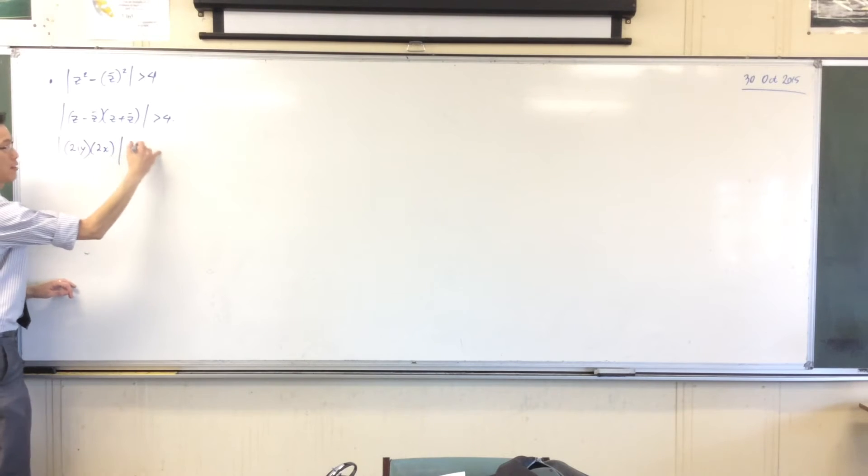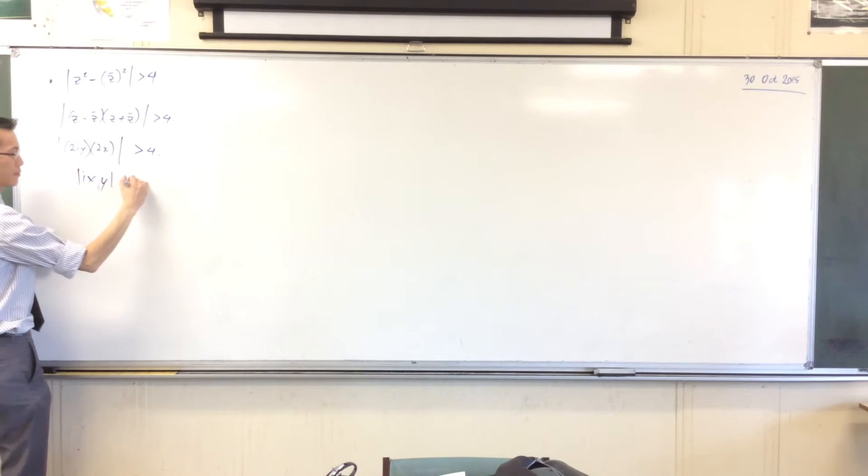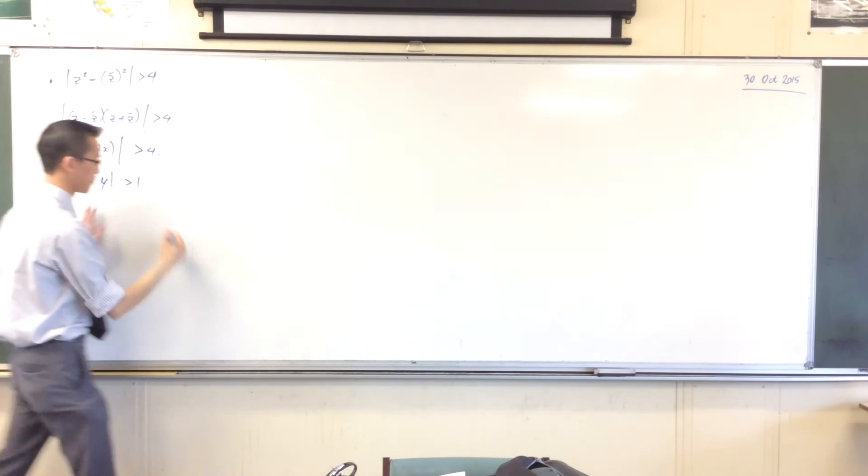So, absolute value, greater than 4. And now you can see why they snuck in a stinky 4 there, right? Like why? What's to get rid of this 4? So now I can tidy this up. That i should be there.